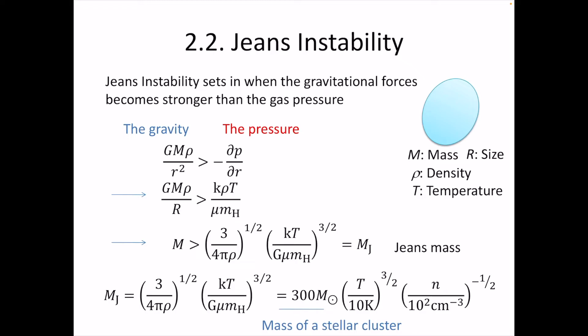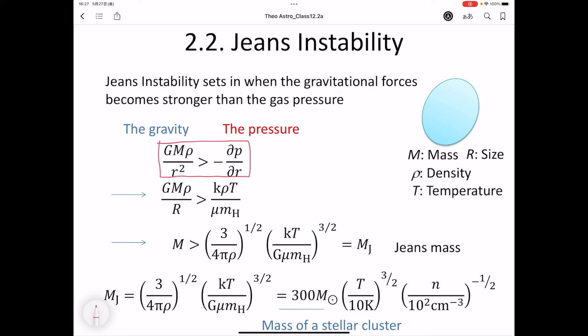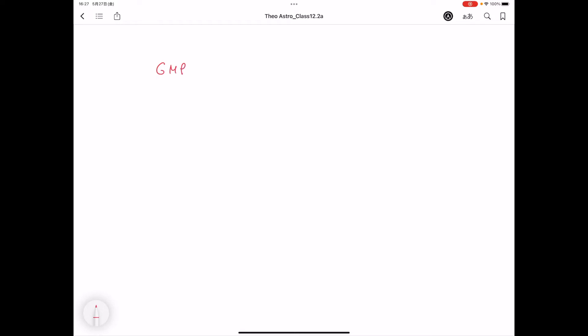We consider some region inside of the molecular cloud. The mass of the region is capital M, R is the size of the region, rho is the density, and T is the temperature. Gravity is expressed as G·M·rho over R squared, and the pressure term is expressed as minus dP/dR, which is the pressure gradient force. If the gravity is larger than the pressure force, it leads to the contraction of that region. This is the condition for gravitational contraction: G·M·rho/R² is larger than the pressure gradient.